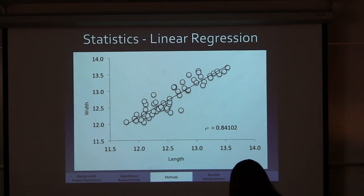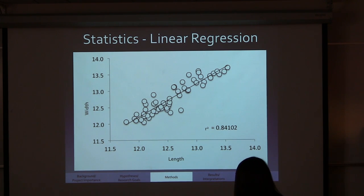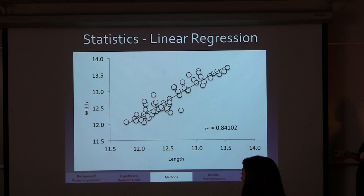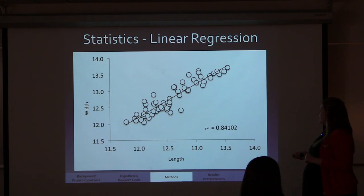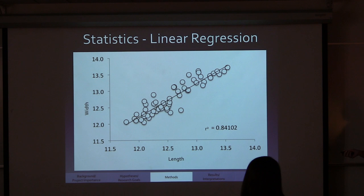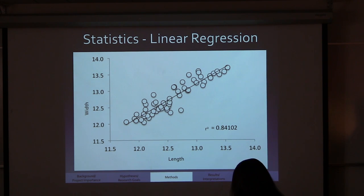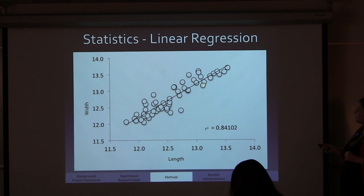The other statistical approach was linear regression. We choose our axes — for example, length and width — to see if there's a correlation between measurements. All data is plotted and then a best-fit regression line is drawn through the data, giving an R-squared value. A higher R-squared value, closer to 1, represents stronger correlation, while a value around 0.5 or less represents less correlation. For example, an R-squared of 0.84 means 84% of the data plots along the regression line — a pretty strong correlation.